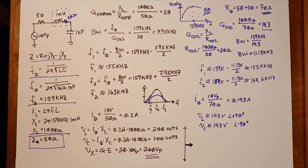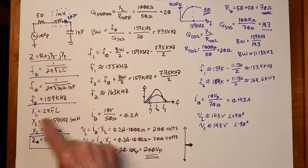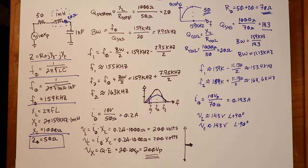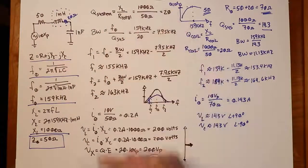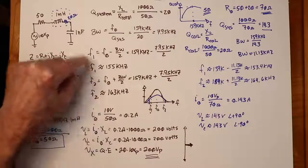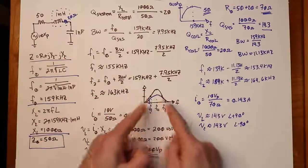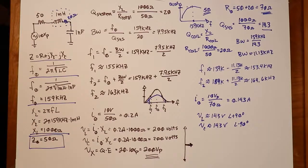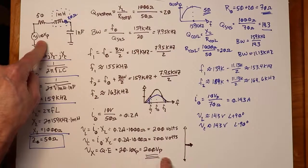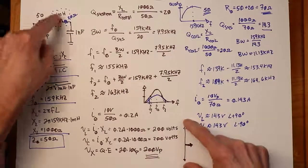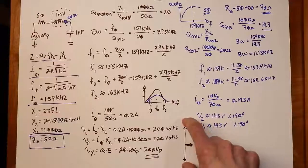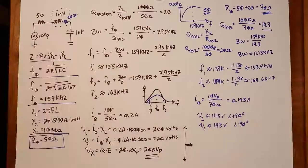This is a nice example of a series resonant circuit. At the resonant frequency, X_L and X_C cancel out. We find the reactance value, sum up total resistance to find system Q, then find bandwidth and the upper/lower half-power frequencies f₁ and f₂. As a general rule, the voltage across the reactive components equals the system Q times the source voltage — remembering these are in opposite phase, so they cancel out.